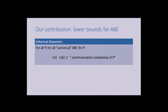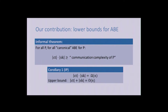Our result, informally: for all predicates P and all canonical ABE—which I will explain later—ciphertext size times secret key size is at least as large as the communication complexity of P. For example, applying the theorem to inner product, the communication complexity is linear in the dimension, giving us this lower bound. The upper bound allows any trade-off in size, so it's not tight in general, but it is tight for some range of parameters. This is the first non-trivial lower bound for ABE.